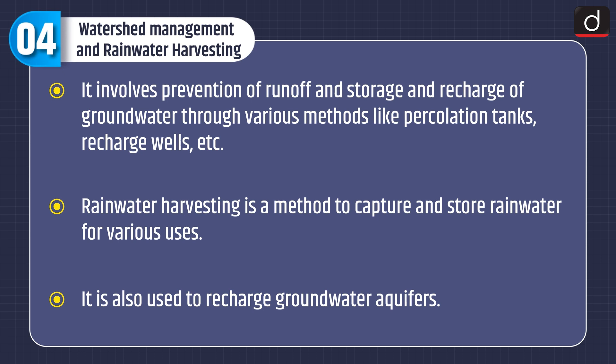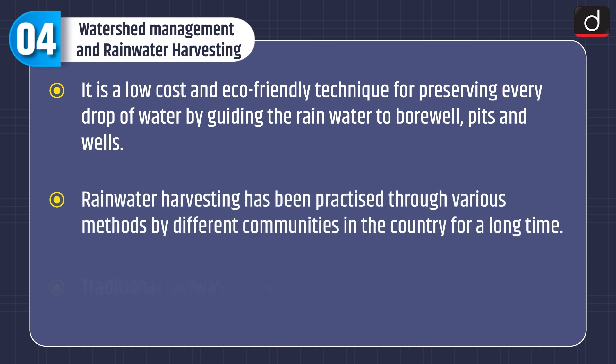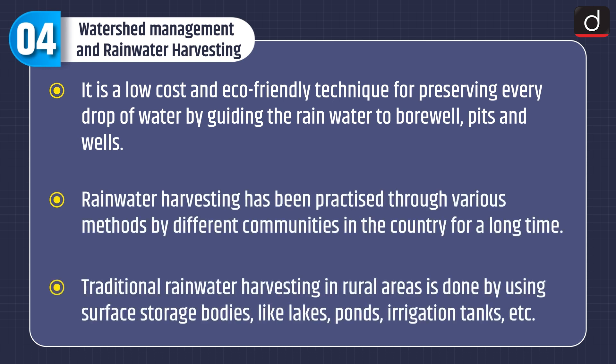These methods include percolation tanks, recharge wells, etc. Rainwater harvesting is a method to capture and store rainwater for various uses. It is also used to recharge groundwater aquifers. It is a low cost and eco-friendly technique for preserving every drop of water by guiding the rainwater to bore wells, pits and wells. Rainwater harvesting has been practiced through various methods by different communities in the country for a long time.